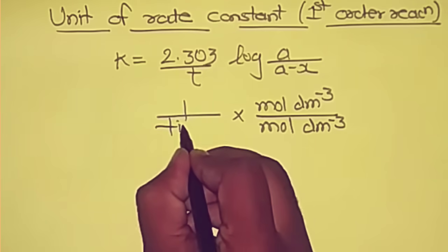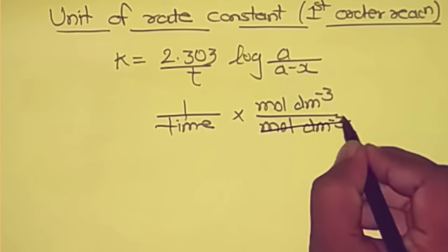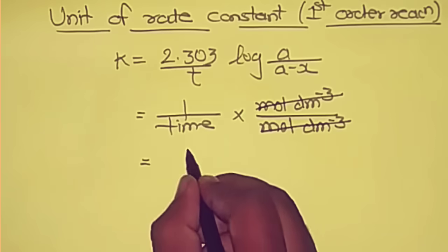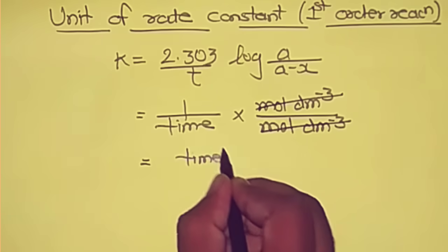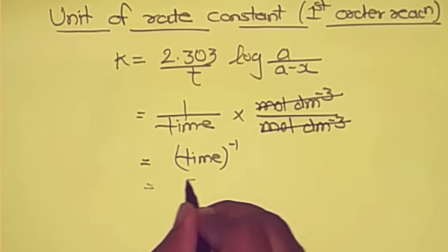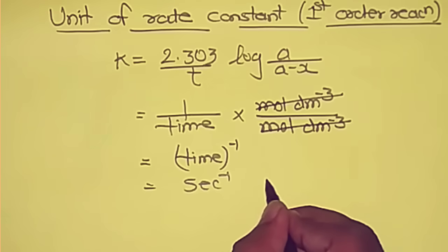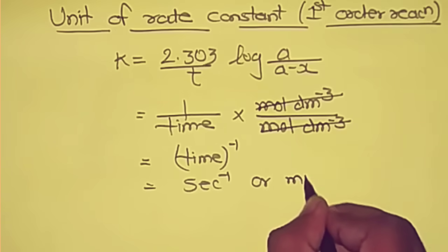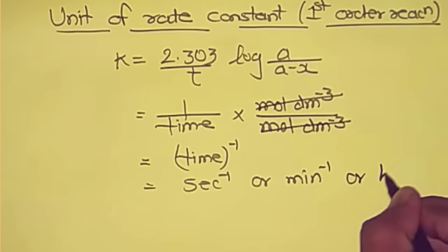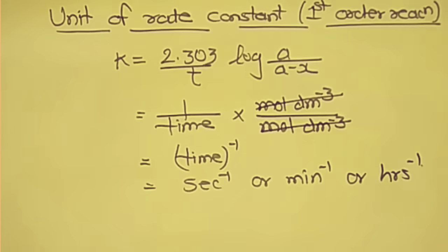So moles per dm cube and moles per dm cube get cancelled, and it becomes time raised to minus 1. So the unit can be either second inverse, or minute inverse, or hours inverse. These are the units of rate constant for first order reaction.